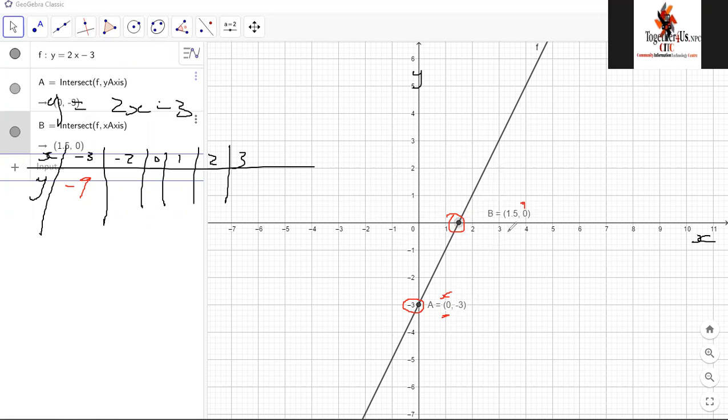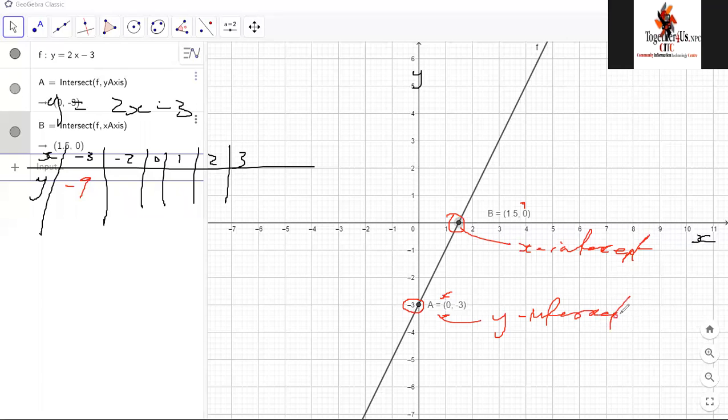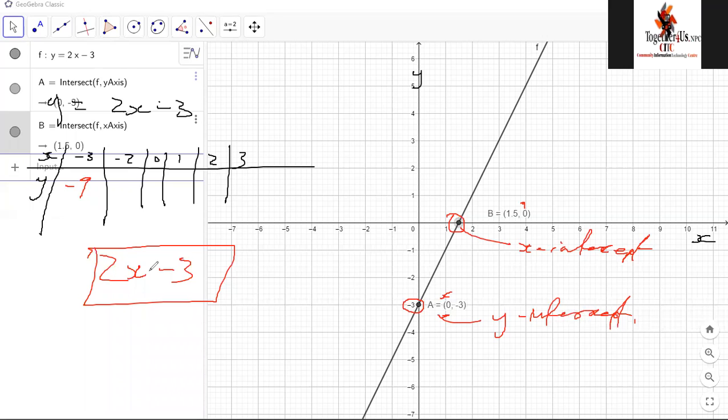But there's a nice word we use for this. We call this the x-intercept and we call this the y-intercept. Now, what we have just done, we have taken that description of think of a number, any number multiplied by 2, then subtract 3 from the answer. And we have taken this and actually represented it on a picture. And what this picture shows us, it's another story that we will now have to look into. In other words, interpretation of the graph.